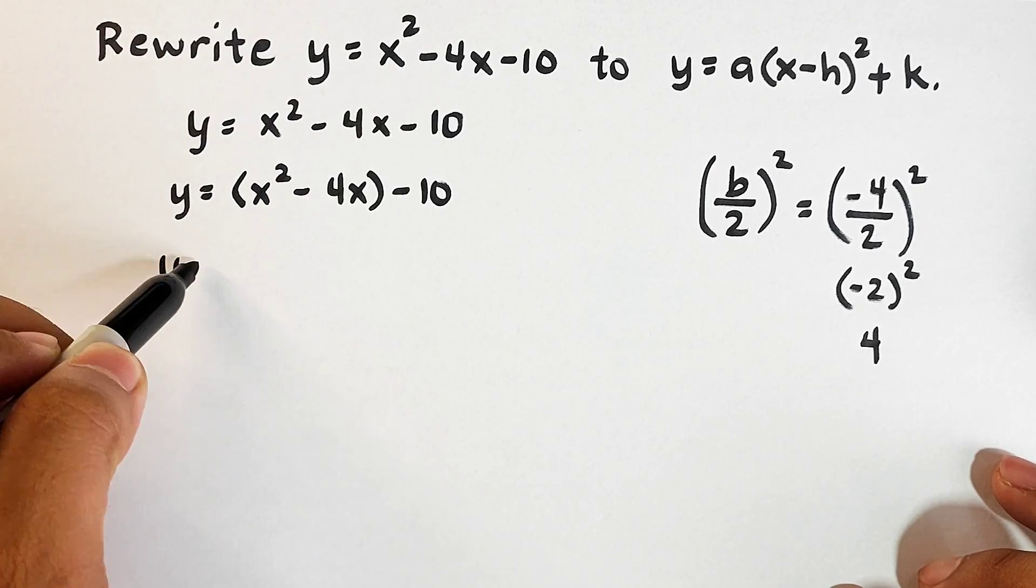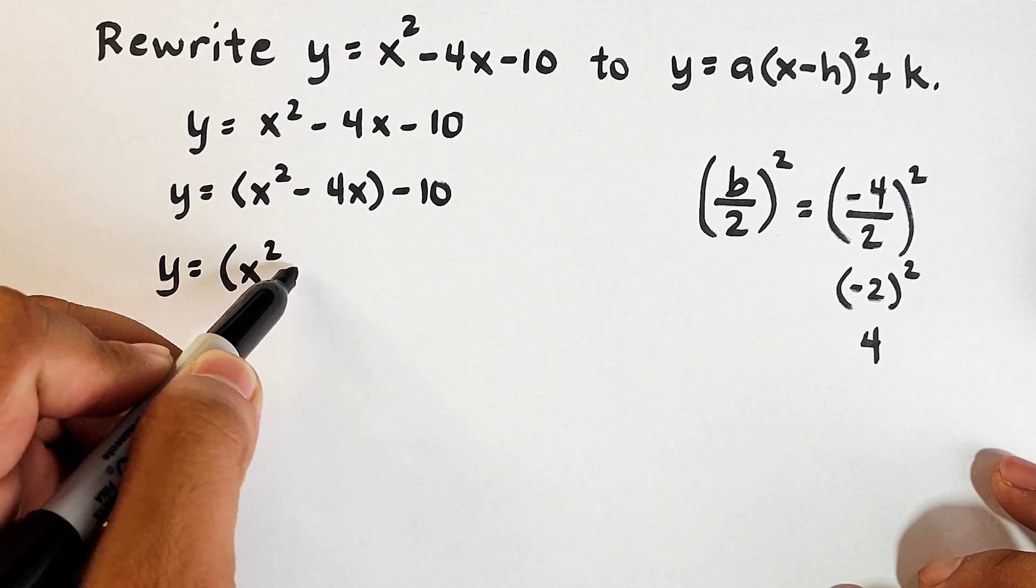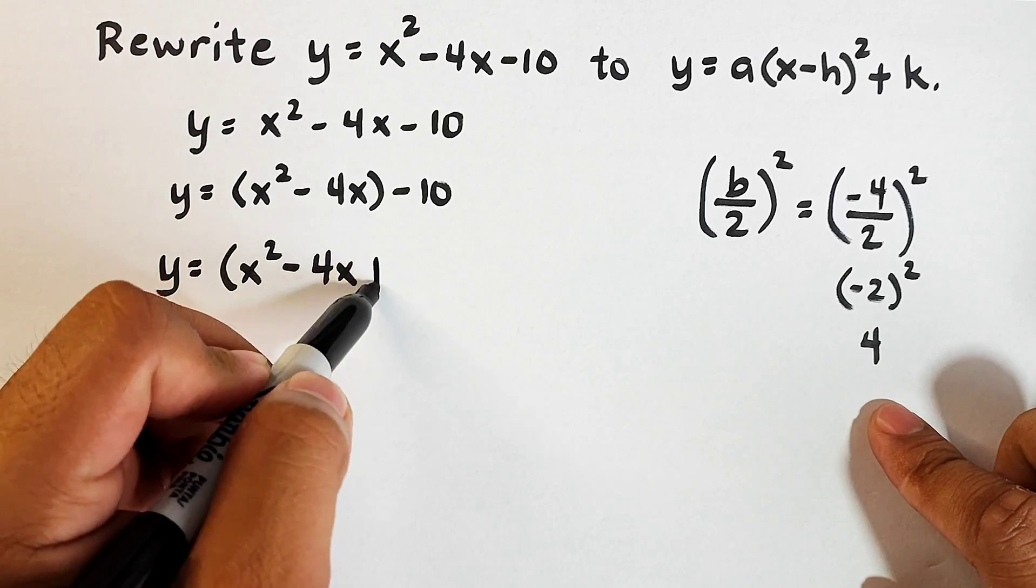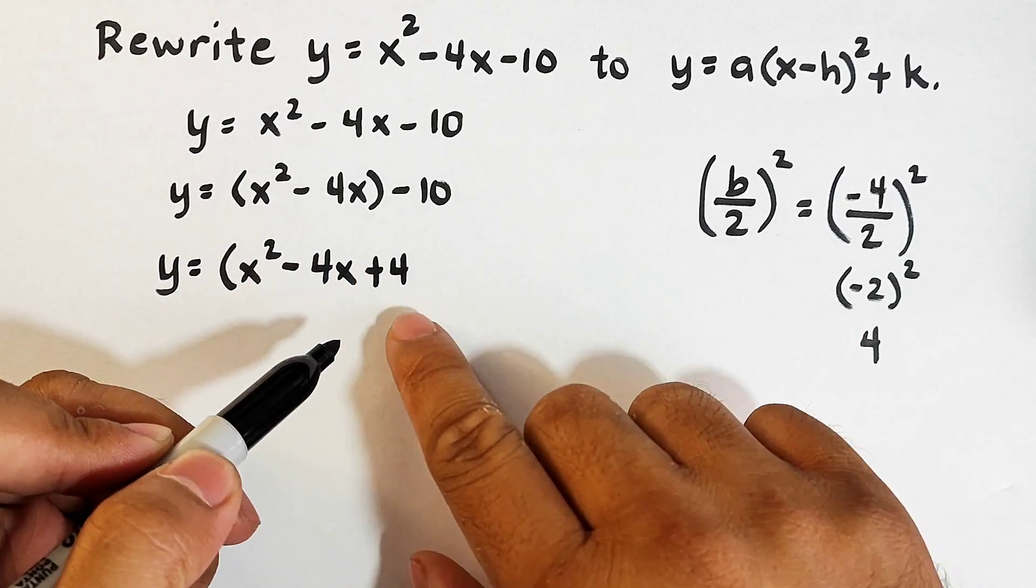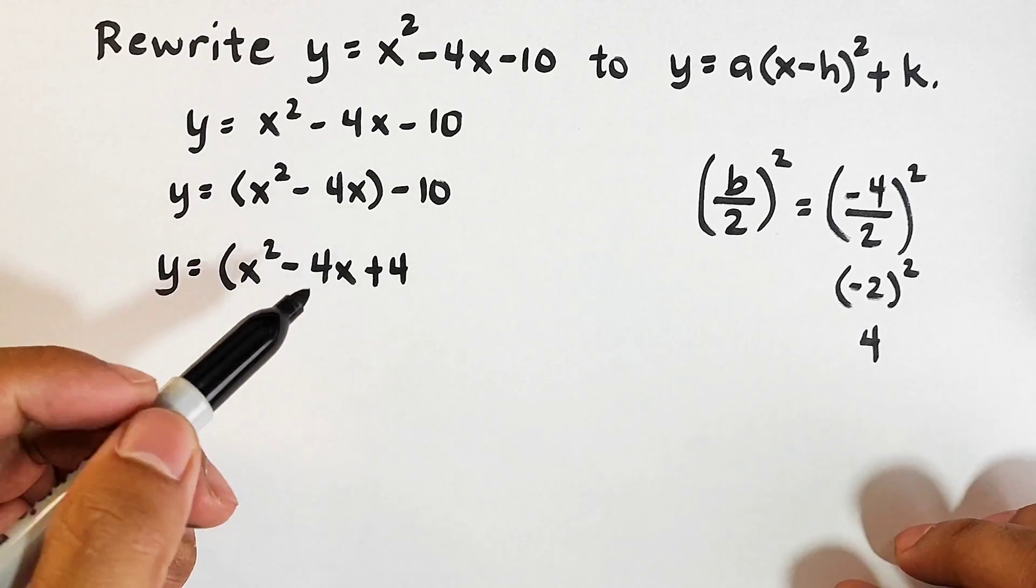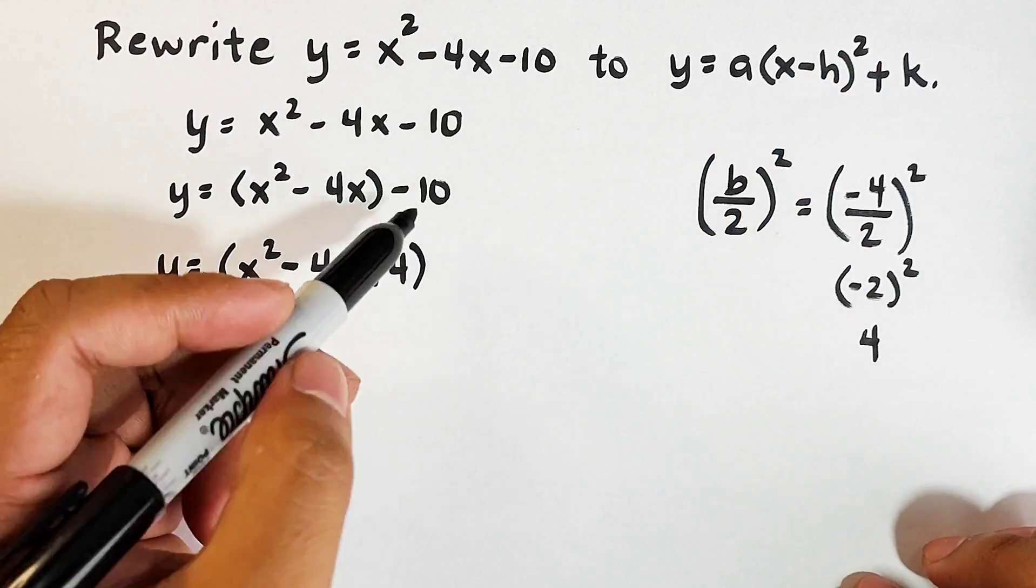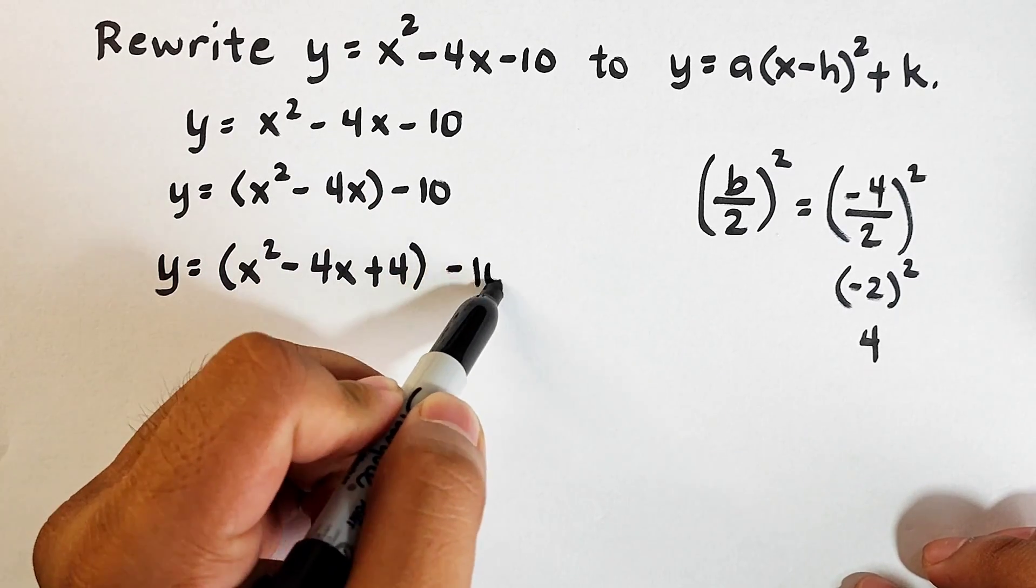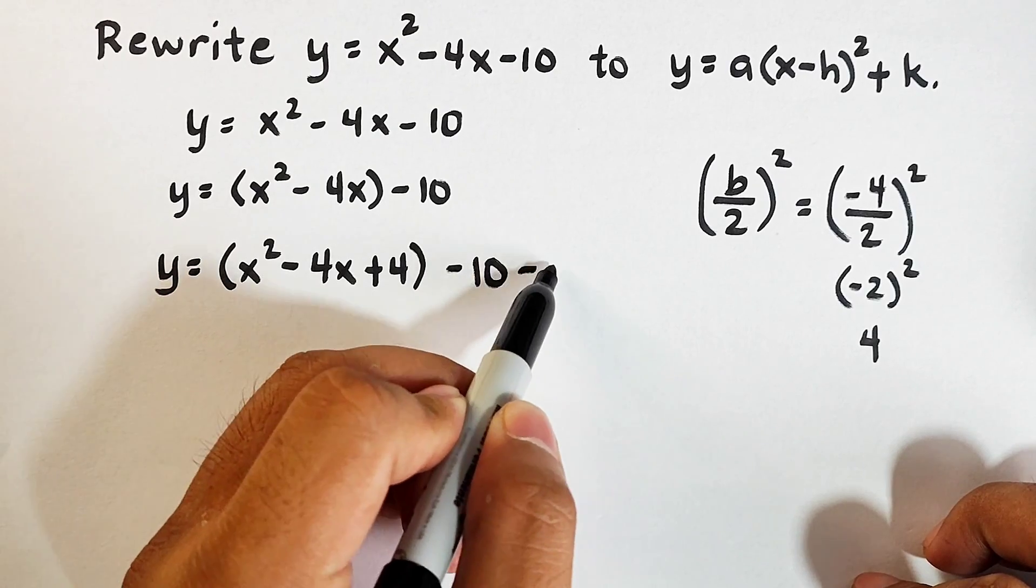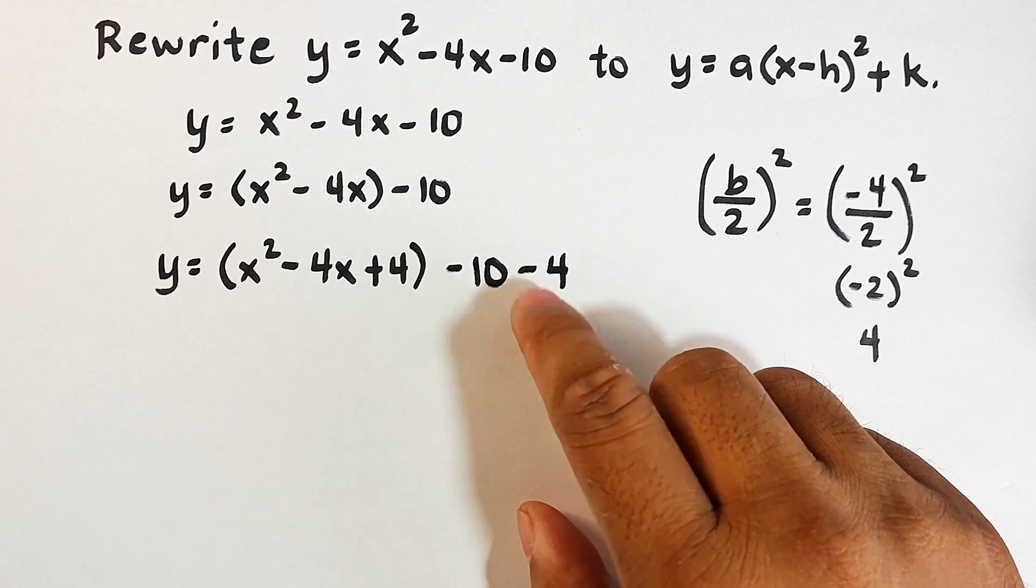So what we have here is y equals the quantity of x squared minus 4x and then plus, plus 4. This plus 4, it came here. Kasi kailangan natin magiging perfect square trinomial para magkaroon tayo na itong x minus h squared. And then minus 10. And ang gagawin natin dito is we will put here minus 4.